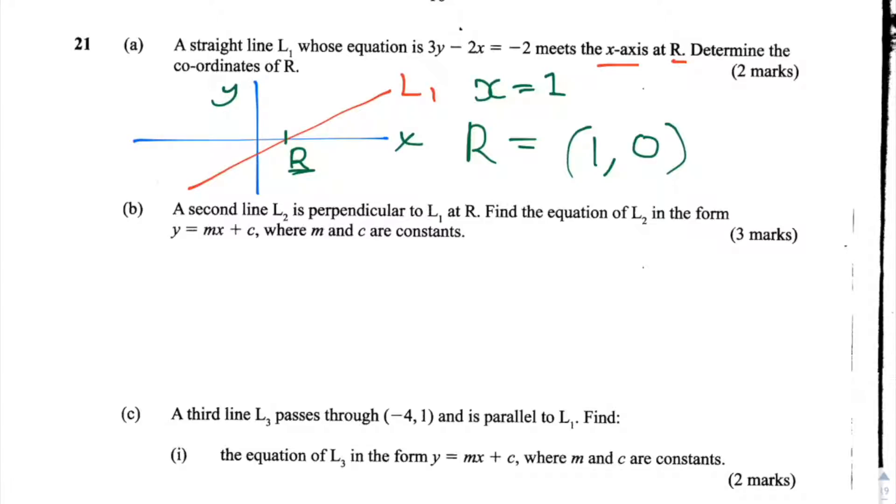So m is the gradient and c is the y-axis intercept, the point at which the line L2 crosses the y-axis. So how do we go about answering this question? Well, first of all let's see what information we've been given.